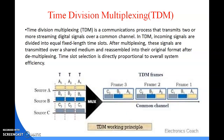Next is Time Division Multiplexing (TDM), another technique where time is the main component. TDM is a communications process that transmits two or more streaming digital signals over a common channel. In TDM, incoming signals are divided into equal fixed-length time slots; after multiplexing, these signals are transmitted over a shared medium and reassembled into their original format after demultiplexing. Time slot selection is directly proportional to overall system efficiency.